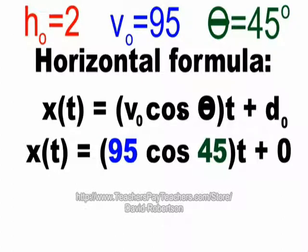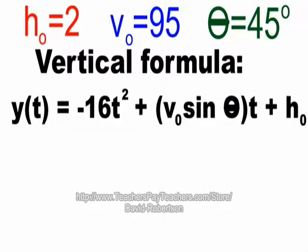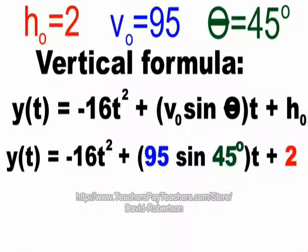Here's the horizontal formula. 95 was the velocity initially, and 45 was your theta, the angle. The vertical motion formula, remember negative 16, is the gravitational pull of the Earth. The initial velocity was 95, and the theta was 45 degrees. h sub zero is 2 because your initial height of the ball was two feet off the ground.